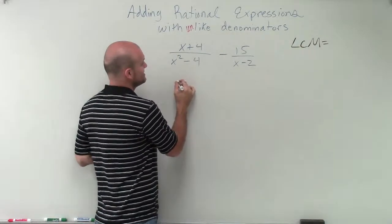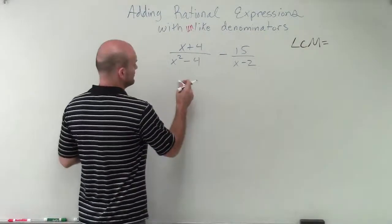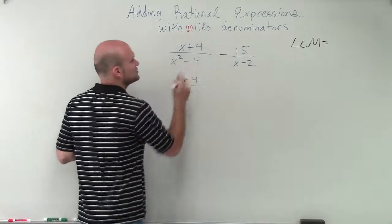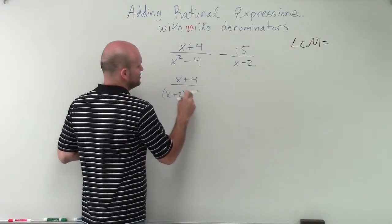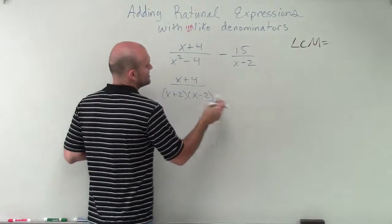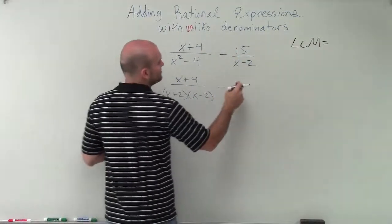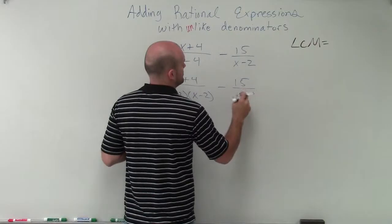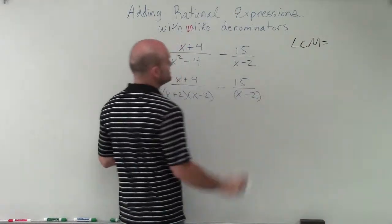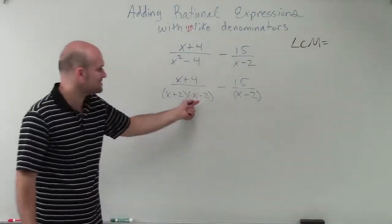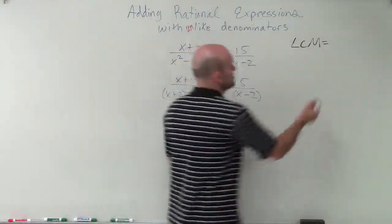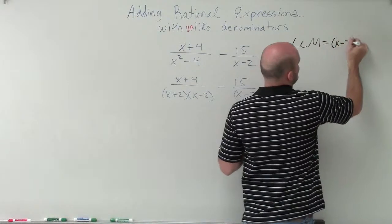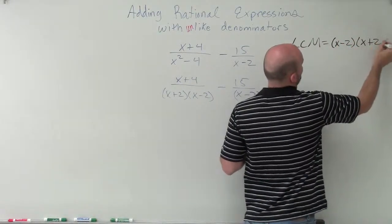So therefore I can simplify this to x plus 4. And the difference of two squares of x squared minus 4 is going to be x plus 2 times x minus 2. Now over here I can't simply do anything. But when we're looking at our LCM we notice that they both share an x minus 2. The only difference is this term has an x plus 2. So therefore my LCM is going to be x minus 2 times x plus 2.